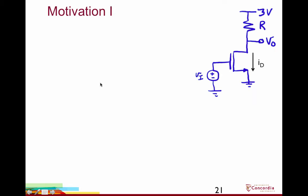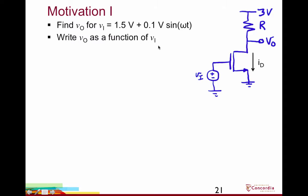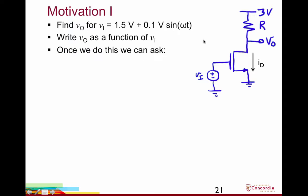We're going to go through a motivation for small signal analysis before jumping into the model and equations. This is the common source amplifier configuration we looked at in the DC calculations in the previous video. Suppose we want to find the output voltage for a given input voltage. The input voltage has been written as a DC quantity plus a 100 millivolt sinusoid. If we have the output voltage as a function of the input voltage, we could ask: what is the voltage gain? This voltage gain might be a function of the operating point.